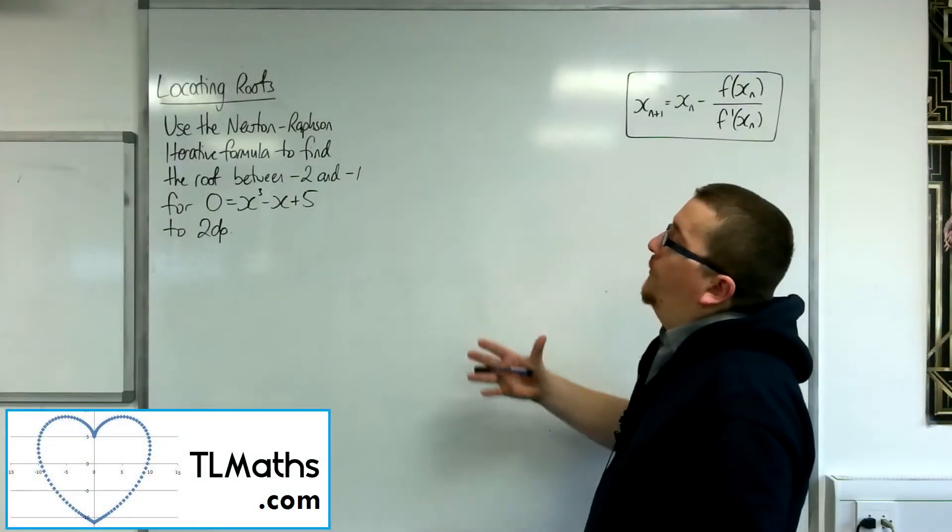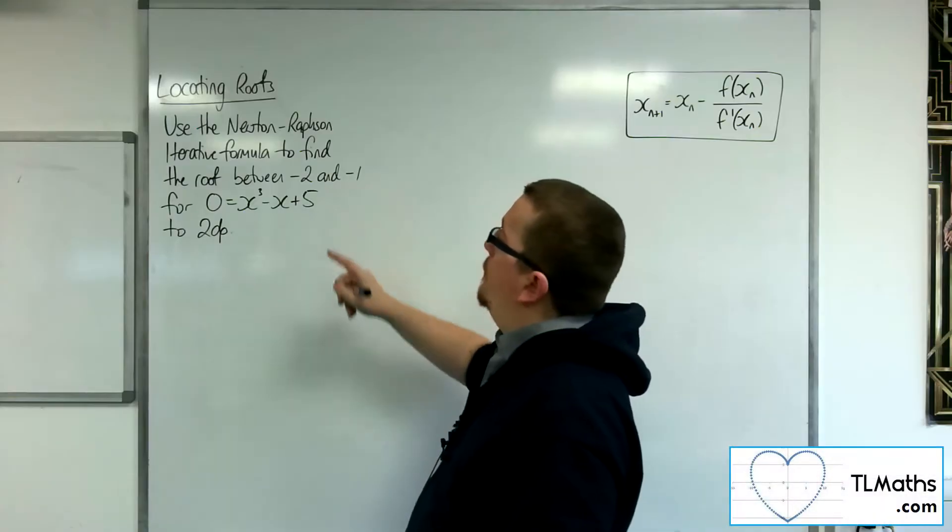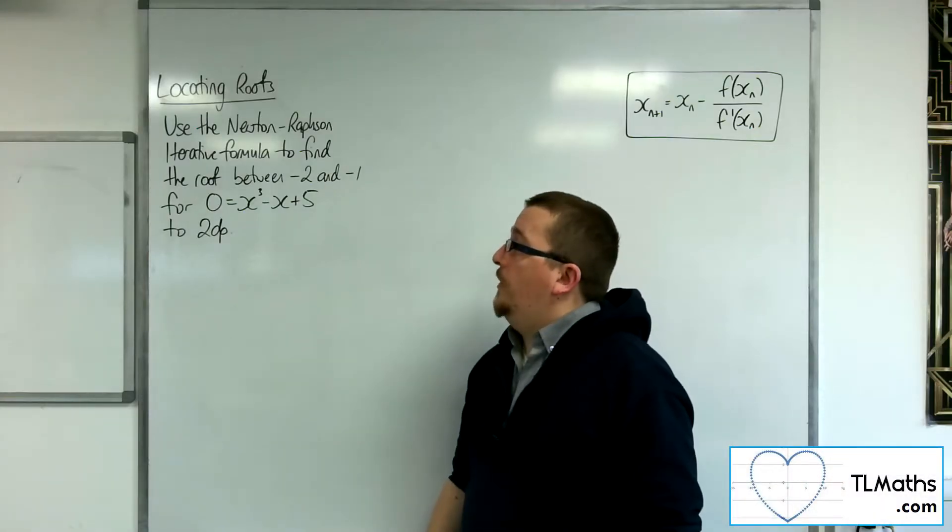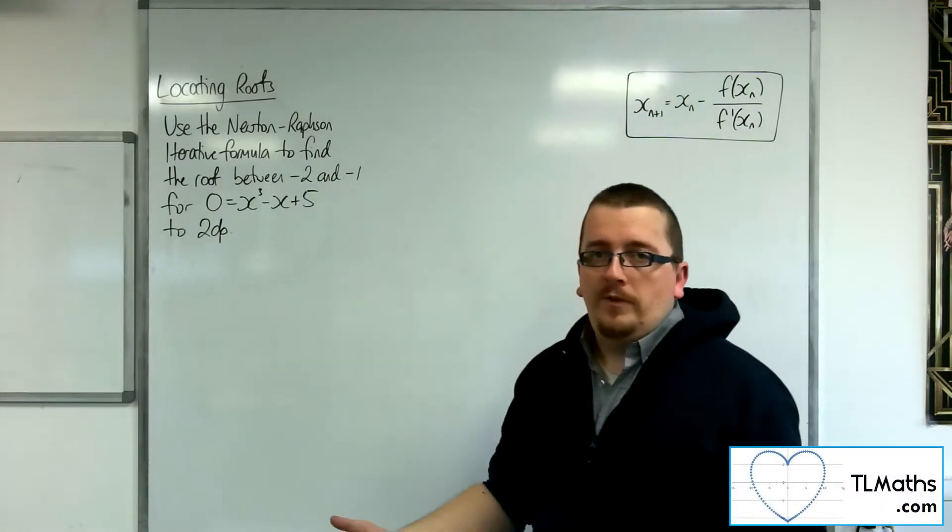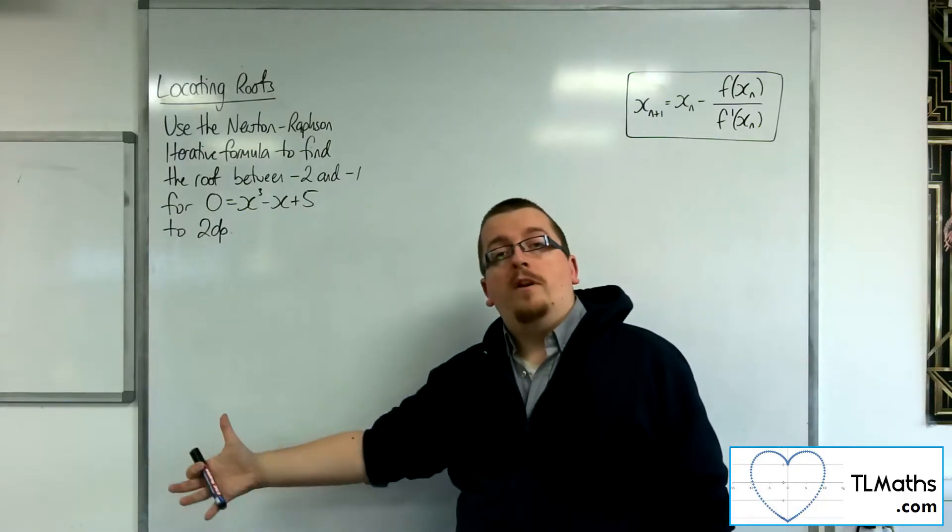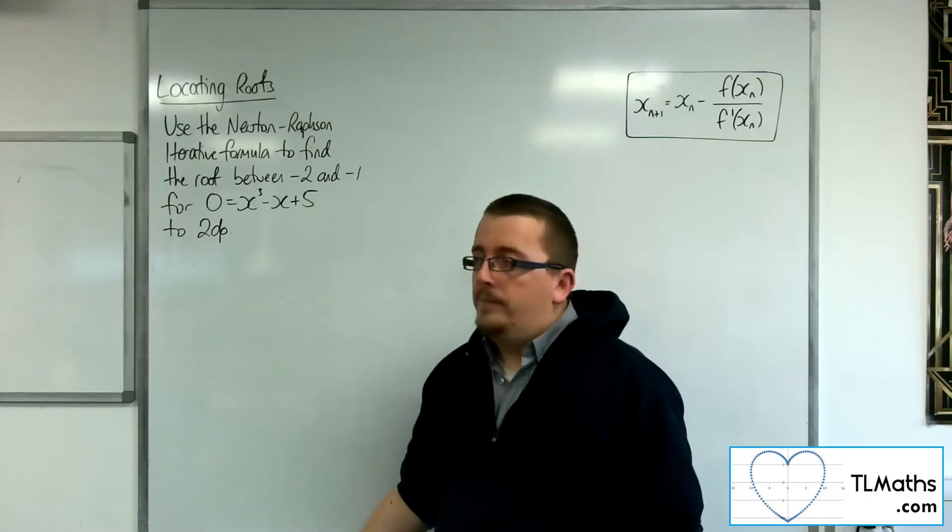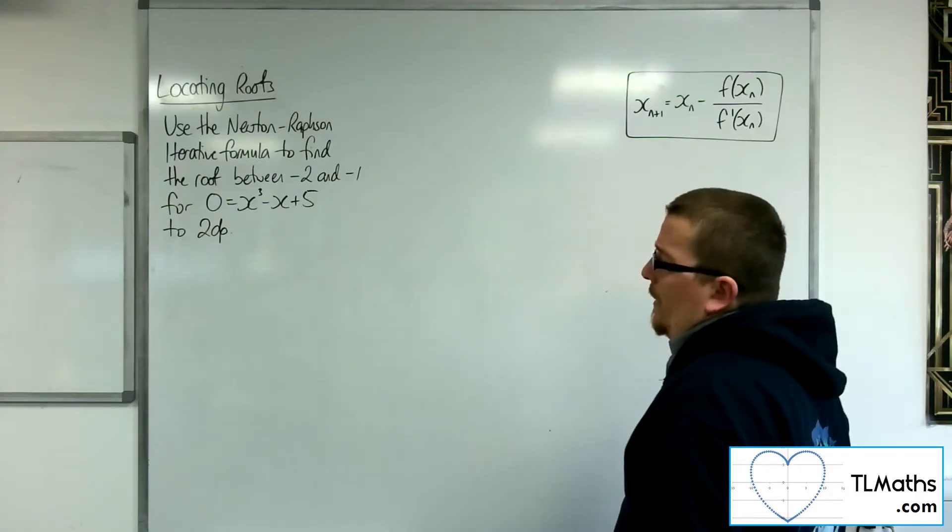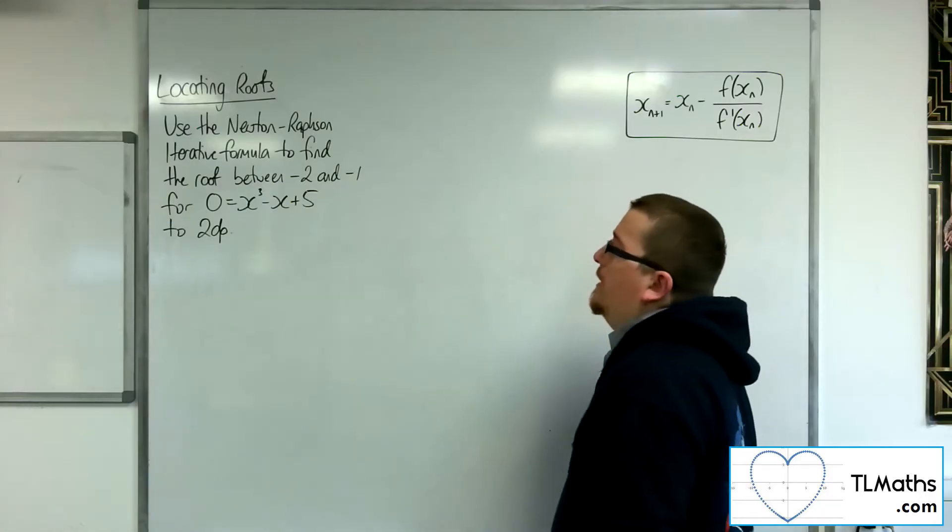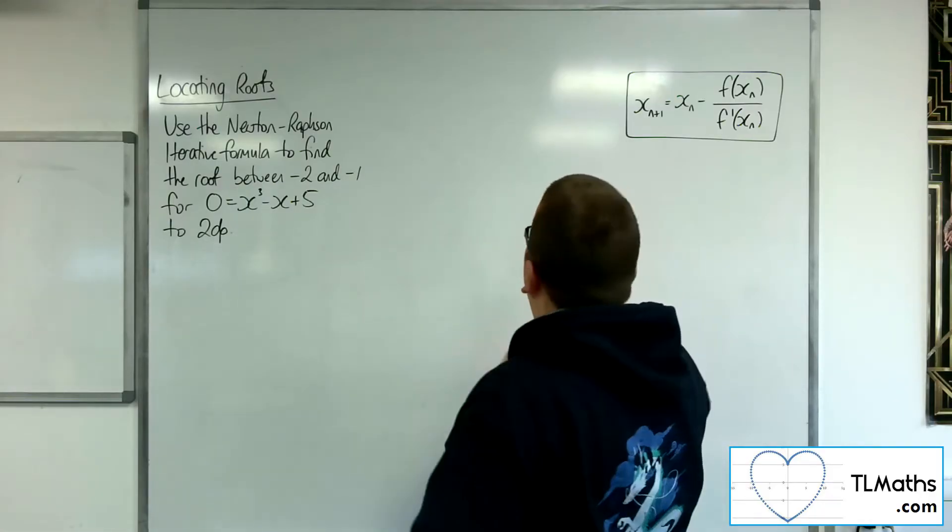Let's say I want to use the Newton-Raphson iterative formula to find the root between -2 and -1 for 0 = x³ - x + 5 to 2 decimal places. Let's say I've already determined that there must be a root between -2 and -1 using the change of sign method.